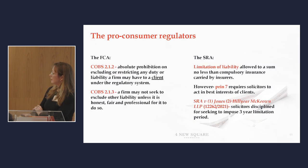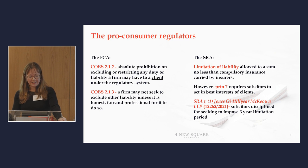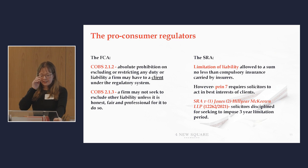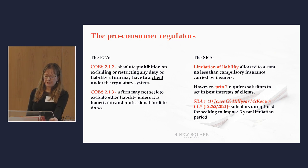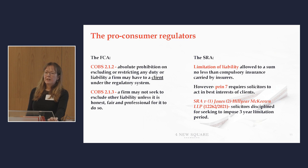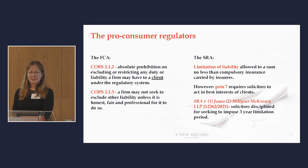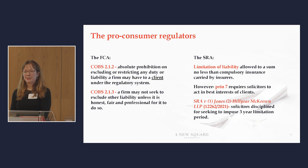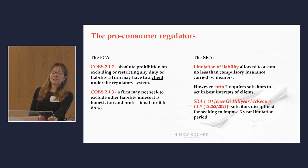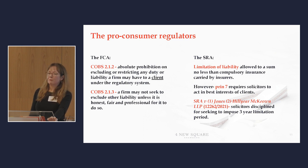So my final topic on roadblocks is the approach of regulators. From my perception at least, different regulators seem to take different approaches to limitations and exclusions — some are much more overt and proactive than others, the SRA and the FCA having lengthier and more express rules than, say, some of the accountancy regulators. The FCA rules are quite a good place to start because they show two of the core concerns of regulators: first, an absolute prohibition in COBS paragraph 2.1.2 on people trying to contract out of the regulatory provisions that apply to them, and second, that a firm may not seek to exclude other liability unless it's honest, fair and professional for it to do so.